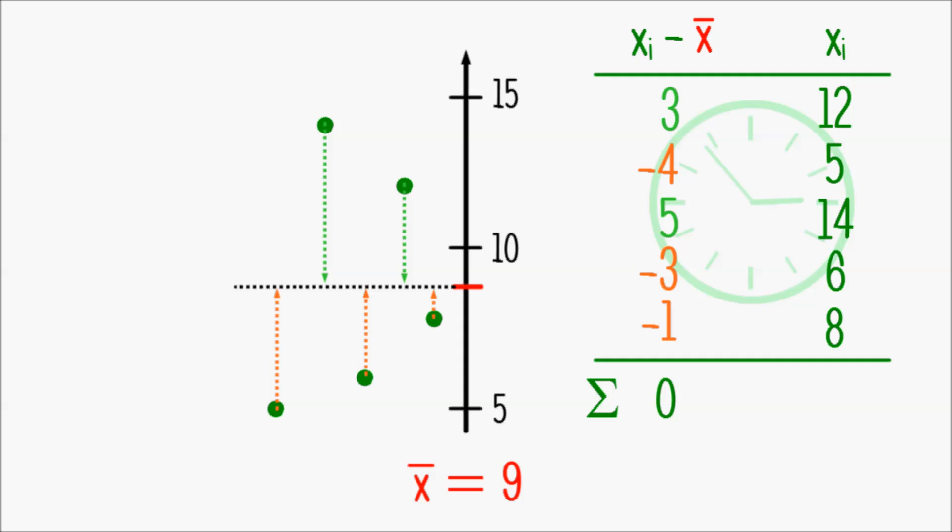To avoid that, one can simply take the absolute value of all differences, which results in positives, and the average of all absolute differences would be 16 divided by 5, since we're looking at 5 values, and that is 3.2.